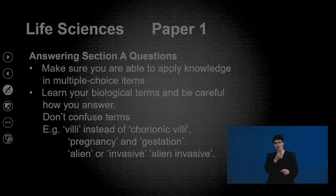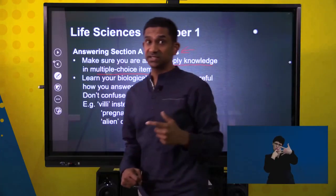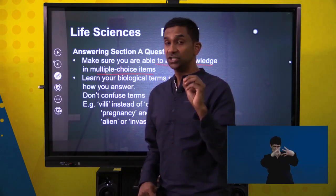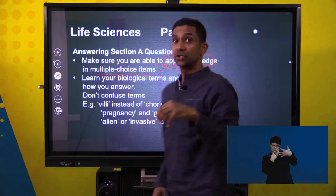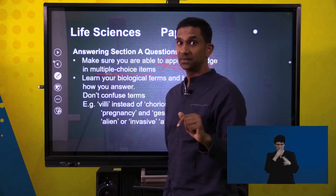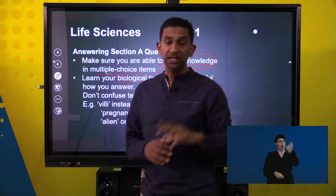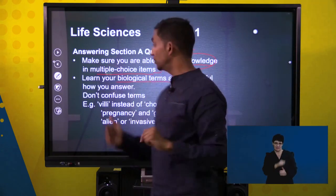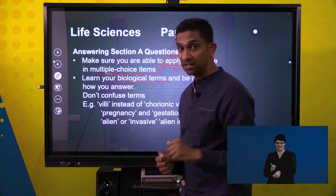Let's look at how to approach Section A. Remember, these are the lower-hanging fruits — easier questions. Apply your knowledge carefully in multiple choice because options are often confusing; you need thorough content knowledge. Eliminate clearly wrong answers. When in doubt, read the question again. Know your biological terms — Section A often has column-matching and true/false questions. Having a vocabulary list ensures you can access these questions easily and bank maximum marks.